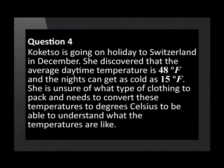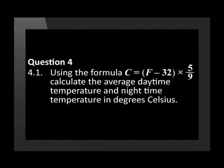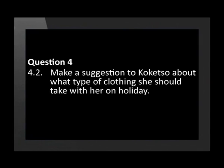Question four involves a temperature conversion. Gogetsо is going on holiday to Switzerland in December. She discovers that the average daytime temperature is 48 degrees Fahrenheit and nights can get as cold as 15 degrees Fahrenheit. Using the formula C equals (F minus 32) multiplied by 5 over 9, calculate the average daytime and nighttime temperatures in degrees Celsius.